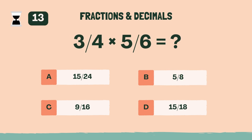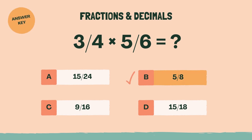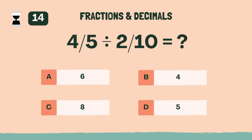What is 3/4 times 5/6? The answer is B, 5/8. What is 4/5 divided by 2/10? The answer is B, 4.